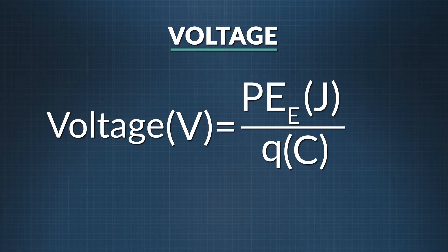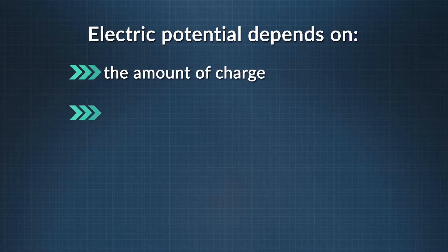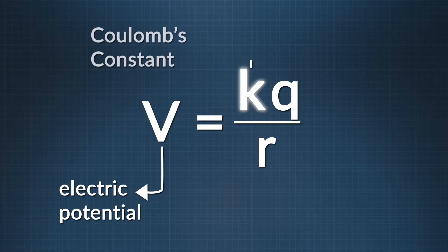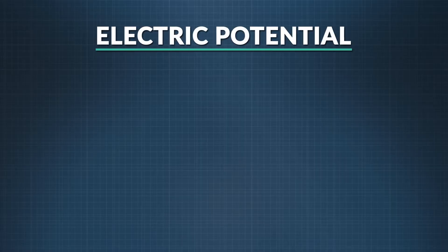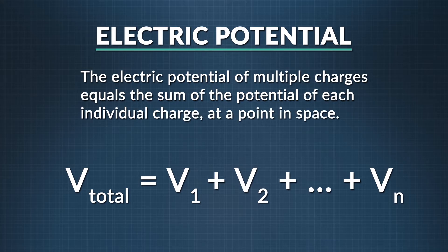This term connects electric potential to the electricity we harness every day. Electric potential at a point in space depends on two main factors: the amount of charge creating the potential and the distance from that charge. We can write this as: electric potential V equals Coulomb's constant K times the charge Q divided by the distance R from Q. If we want to solve for electric potential at a point created by more than one charge, the electric potential of multiple charges equals the sum of the potential of each individual charge at that point in space. Like electric potential energy, electric potential is a scalar quantity, so it's easy to add together.